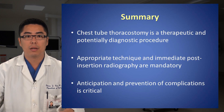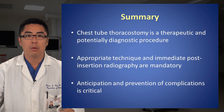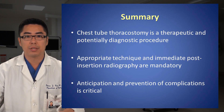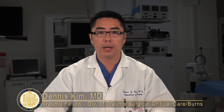Summary: Chest tube thoracostomy is a therapeutic and potentially diagnostic procedure, particularly in patients presenting with undifferentiated shock in which there is an unknown source for the shock. Appropriate technique and immediate post-insertion radiography are mandatory for the successful placement of a chest tube. Anticipation and prevention of complications are critical to success. Thank you for joining us. My name is Dr. Dennis Kim with the UC San Diego Division of Trauma, Surgical Critical Care, and Burns.